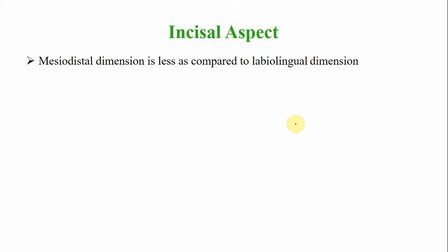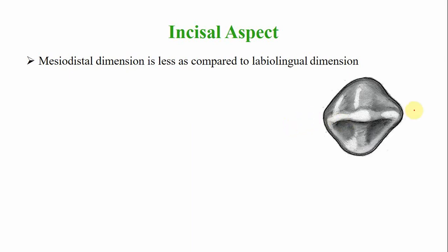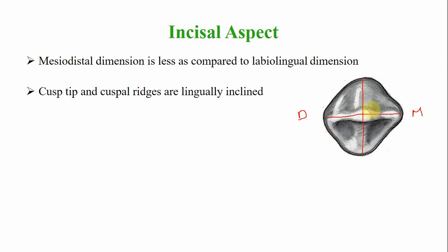From the incisal aspect, the mesiodistal dimension is less than the labiolingual dimension. The cusp tip is lingually inclined compared to the maxillary canine — in fact, the crowns of all mandibular teeth are more lingually inclined. The cingulum is offset towards the distal side.